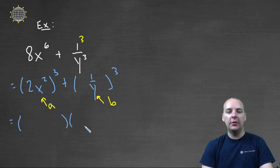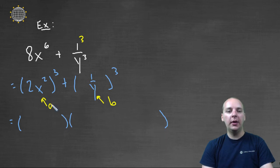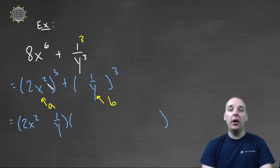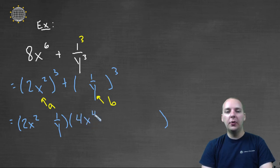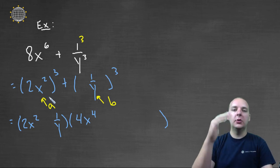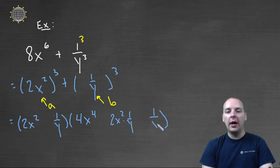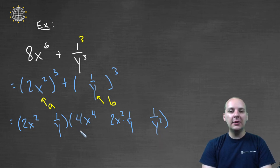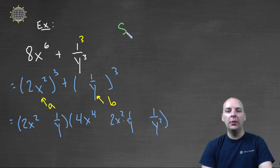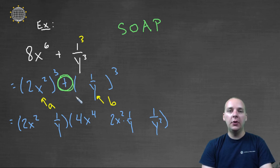With a small parenthesis and a large one, we fill in A, B, A squared, AB, and B squared. So we get: two X squared; one over Y; A squared which is four X to the fourth; AB which is two X squared times one over Y; and B squared which is one over Y squared. Then applying SOAP — same, opposite, always positive — we place a plus, minus, and plus to complete the factorization.